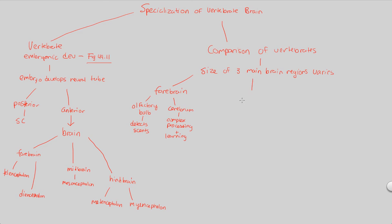The midbrain gives rise to the mesencephalon, but generally speaking, the midbrain is important as a coordinator — specifically, it coordinates sensory input. Some organisms have a great deal of sensory input to process, so you would expect their midbrain size to vary depending on how much sensory input they need to coordinate.